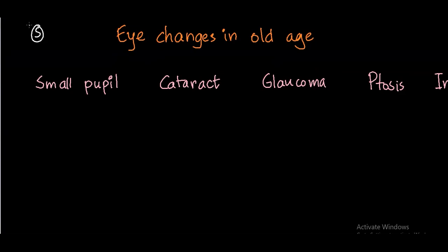What are the eye changes that happen in old age? It starts with the pupil — the pupil becomes small and it does not react well with mydriatics, meaning it does not dilate well.